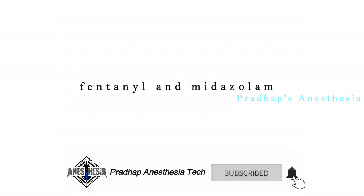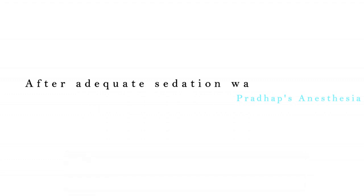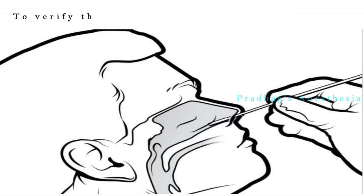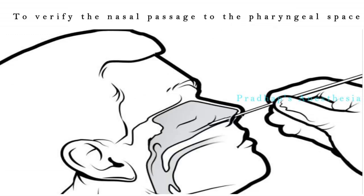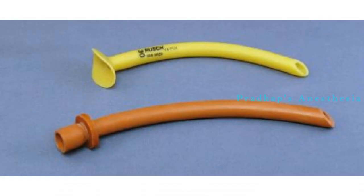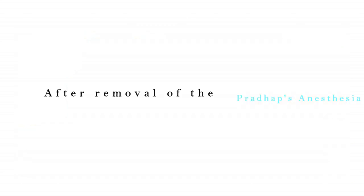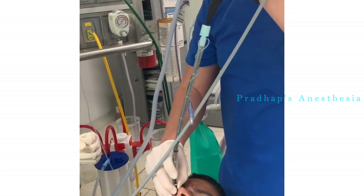A wooden applicator stick with a cotton swab was inserted through the nasal meatus to verify the nasal passage to the pharyngeal space. A nasopharyngeal airway of either 8.0 millimeters or 9.5 millimeters was inserted to confirm the patency of the nasal passage. After removal of the nasal airway, a nasotracheal tube was then advanced into the pharynx.